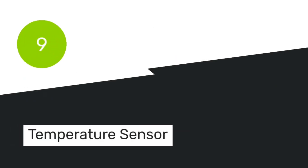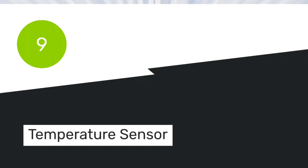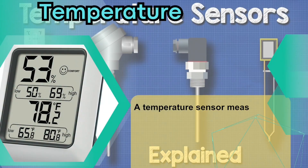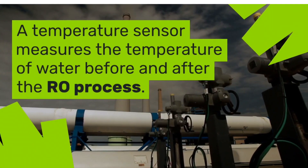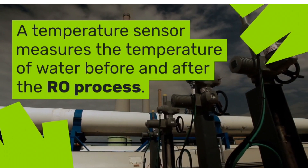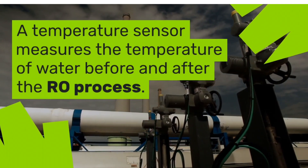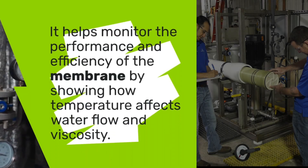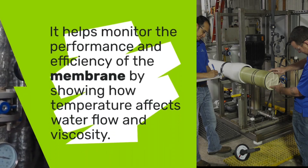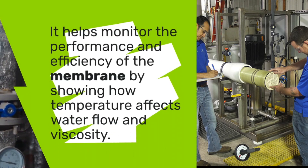Number 9: Temperature Sensor. A temperature sensor measures how hot or cold a fluid or object is by changing its electrical properties in response to temperature changes. It is used to check the temperature of the water before and after the RO process. It also helps to monitor the performance and efficiency of the membrane by showing how temperature affects the water flow and viscosity.